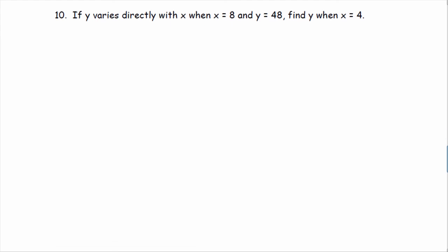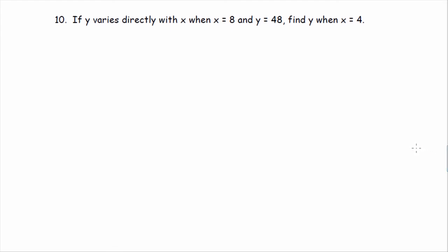Same type of problem. If y varies directly with x, we know it's in this form, y equals kx. When x is eight and y is 48, find y when x is four. Step one, we take this early information and plug it in to solve for k. y is 48, x is eight. We want to solve for k. So, divide by eight on both sides, and k equals six.